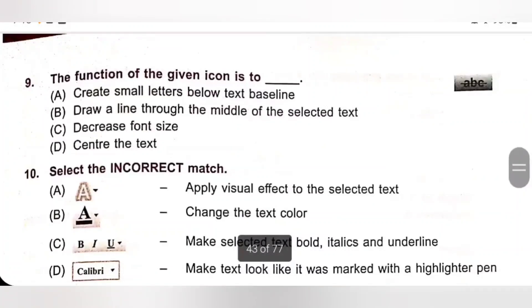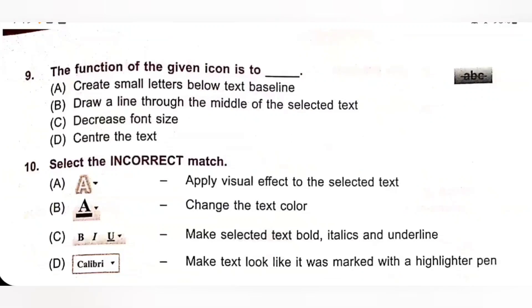Ninth question: The function of the given icon is to — A. Create small letters below text baseline. B. Draw a line through the middle of the selected text. C. Decrease font size. D. Center the text. The given icon is the Strikethrough effect. It draws a line through the middle of the selected text. Option B is the correct answer.